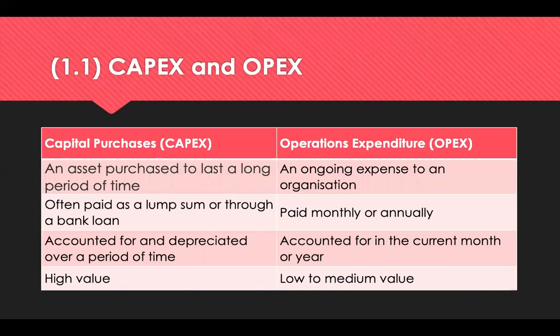Operational expenditure, known as OPEX, covers ongoing expenses that ensure the efficient day-to-day running of a business. This is usually paid monthly or annually and will have a low to medium value, including rents, raw materials, salaries, insurance and transport. To recap: CAPEX refers to capital expenditure and OPEX refers to operational expenditure. Capital is incurred when a business acquires an asset that could be beneficial beyond the current tax year. The operational expenditure are those expenses a business incurs to run smoothly.